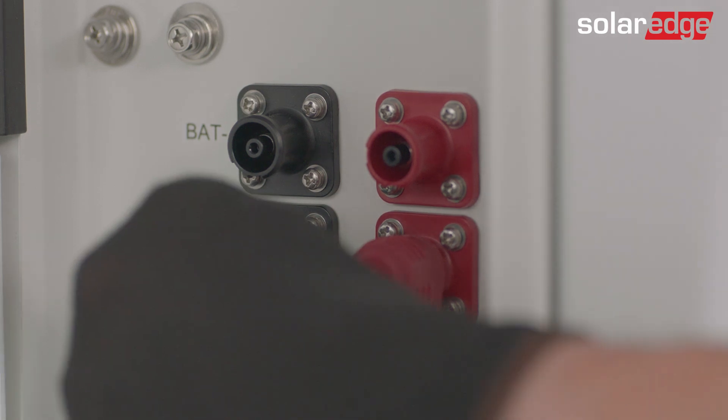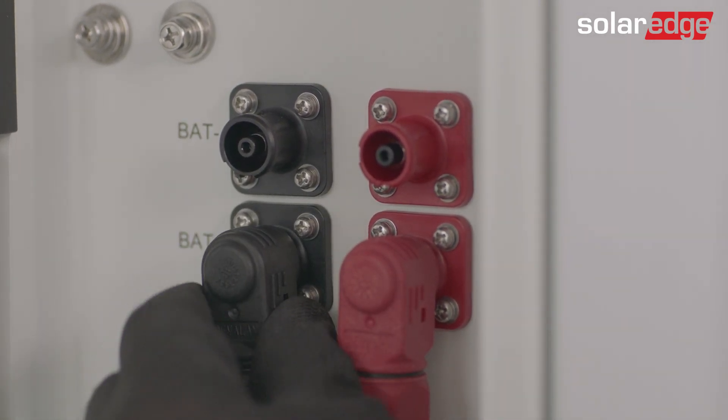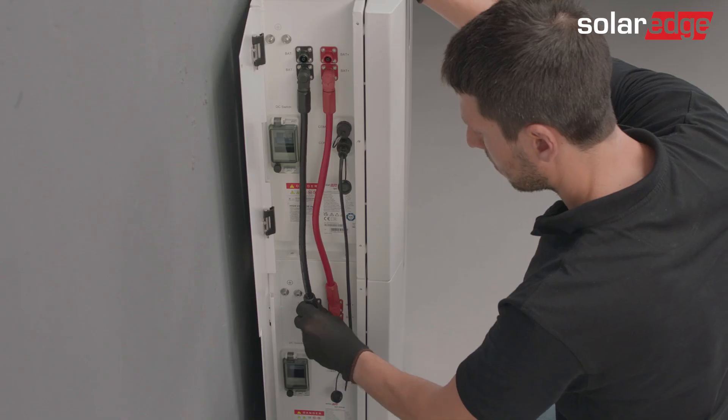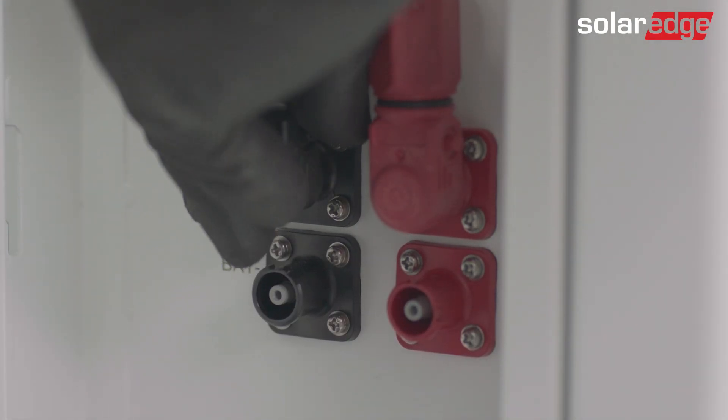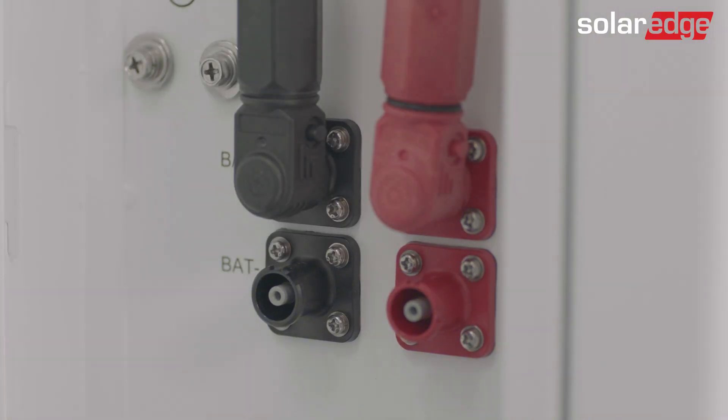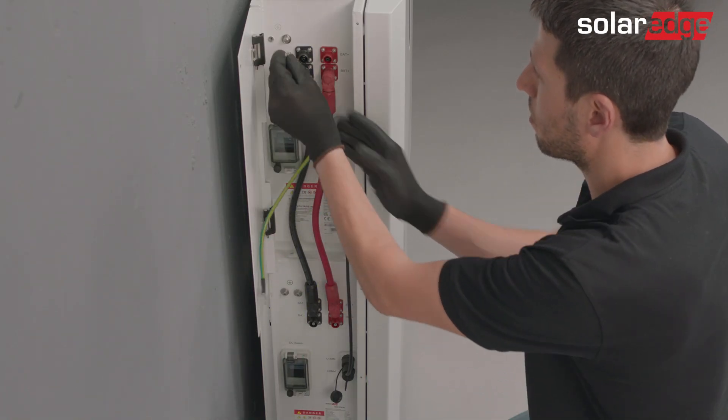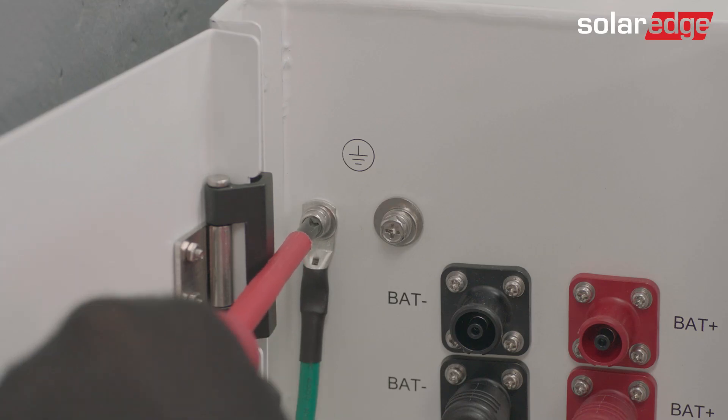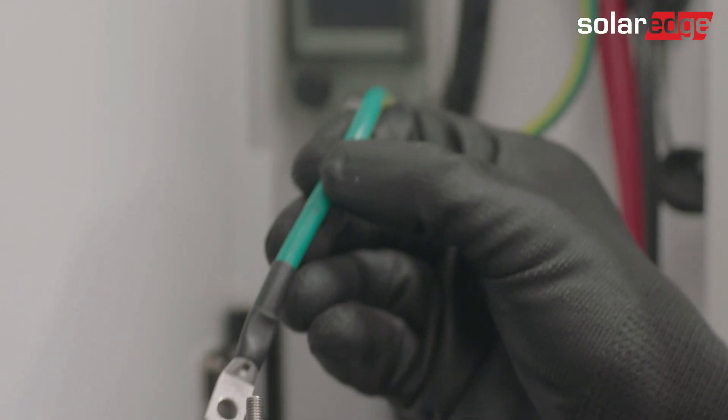Afterward, assemble the black cable between the bottom black DC connector of the upper battery to the upper black DC connector of the bottom battery. Once again, you will need to hear a click sound once it's properly connected. Last but not least, the grounding cable. Connect it from the left screw of the upper battery to the opposite left of the battery below it.